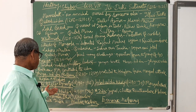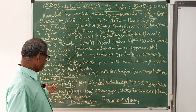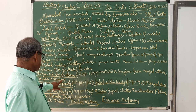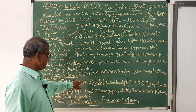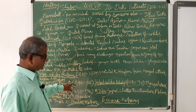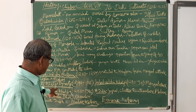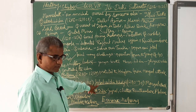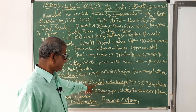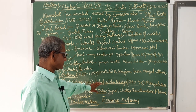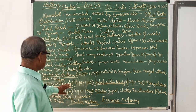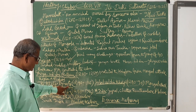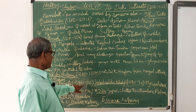After Balban's death, Kaikobad came to the throne, but Jalaluddin Khalji, the governor of Punjab, killed Kaikobad and captured power. With this, the new Khalji dynasty began, which ruled from 1290 to 1316.